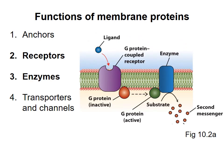Receptor proteins have binding sites that are specific to certain molecules, or ligands. When the ligand of interest is present outside the cell, it binds to the receptor, causing the receptor to send some sort of signal inside the cell. This allows the cell to react to changes in external conditions.